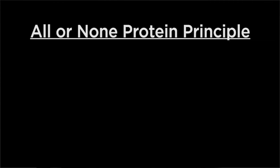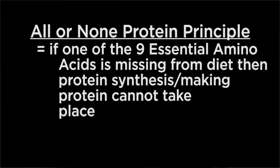The all-or-none principle states that if one of the nine essential amino acids is missing from the diet, then protein synthesis is impossible — it cannot take place. Protein synthesis is essentially the process of making protein.